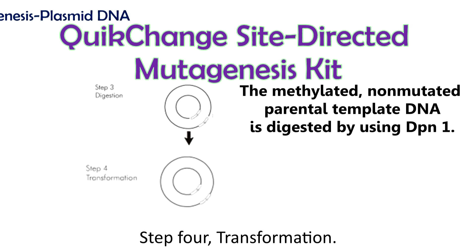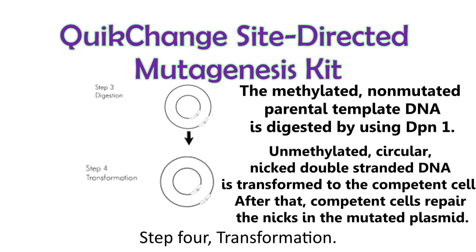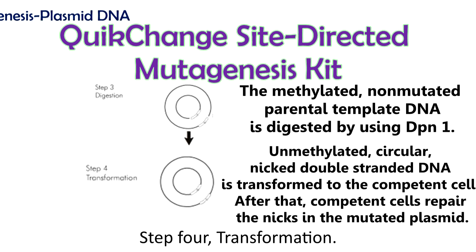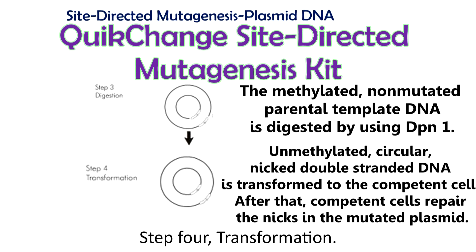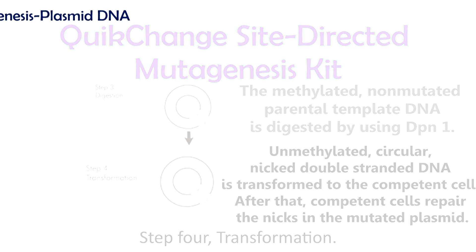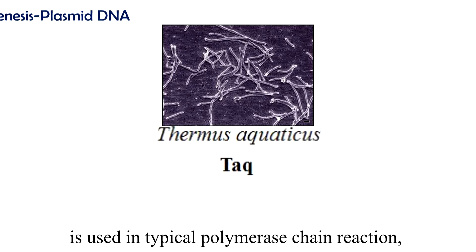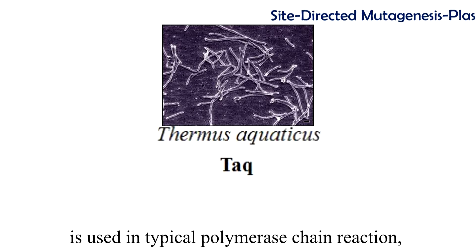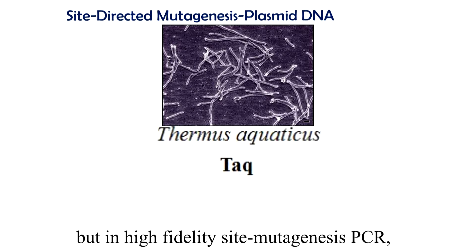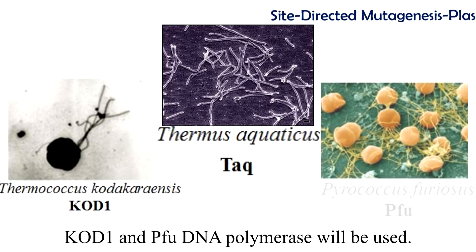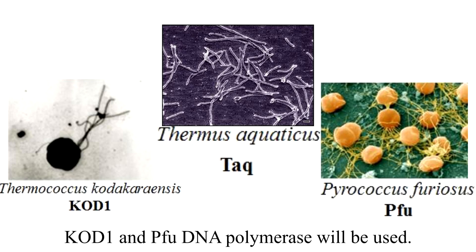Step 4 is Transformation: unmethylated, circular, nicked double-stranded DNA is transformed into the competent cell. After that, competent cells repair the nicks in the mutated plasmid. Normally, Taq polymerase from Thermus aquaticus is used in typical PCR, but in high-fidelity site mutagenesis PCR, KOD1 and Pfu DNA polymerase will be used.